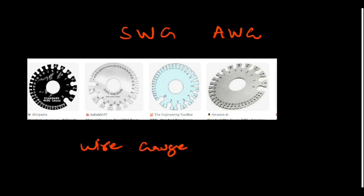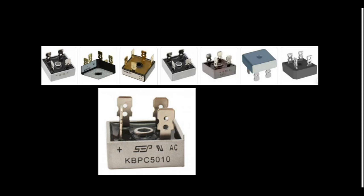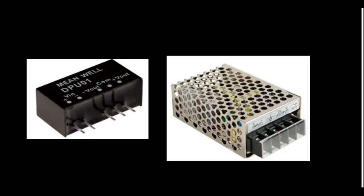This is a wire gauge — a measuring device, standard wire gauge. And these are the rectifier block. How do you identify a rectifier block? It will have two connections for AC — that is line and neutral — and then there will be one positive terminal and one negative terminal. From that you can identify it is a rectifier block, or we can also say it is a bridge rectifier.